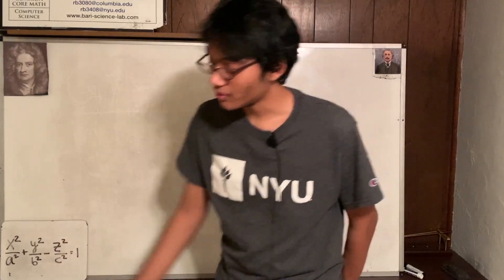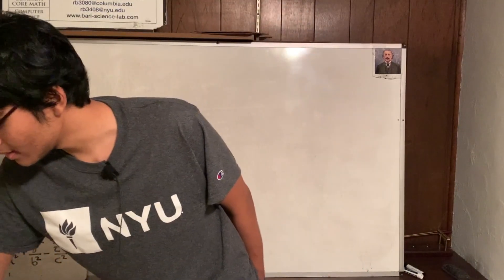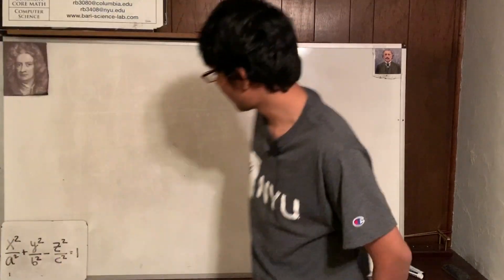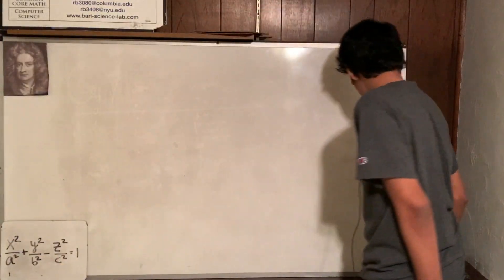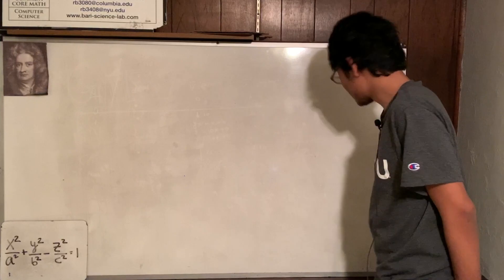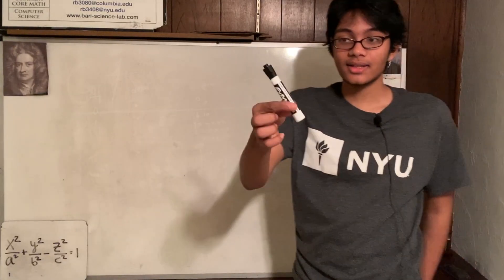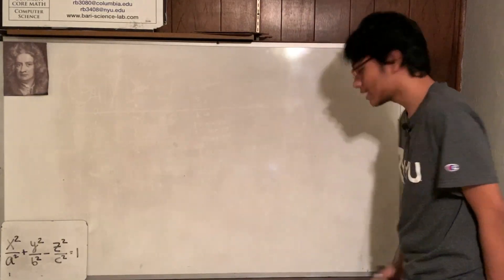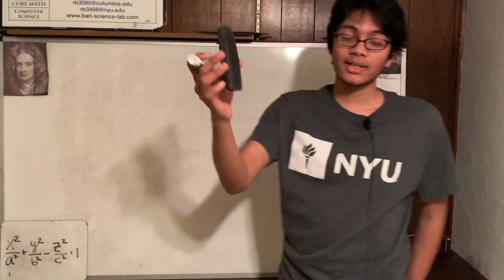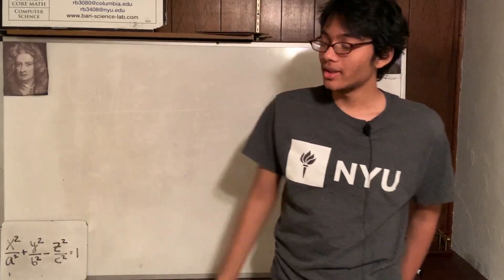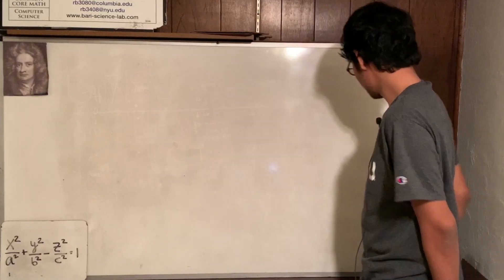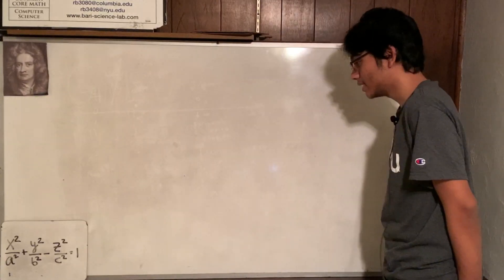Is it like a cylinder, like this expo marker? Is it a rectangular prism, like this eraser? Who knows? We'll figure it out.